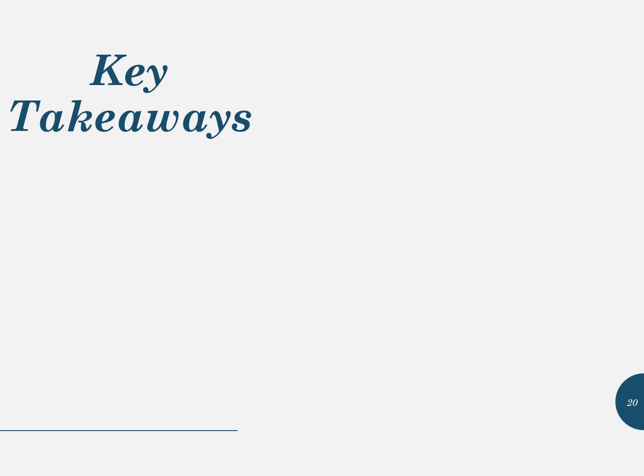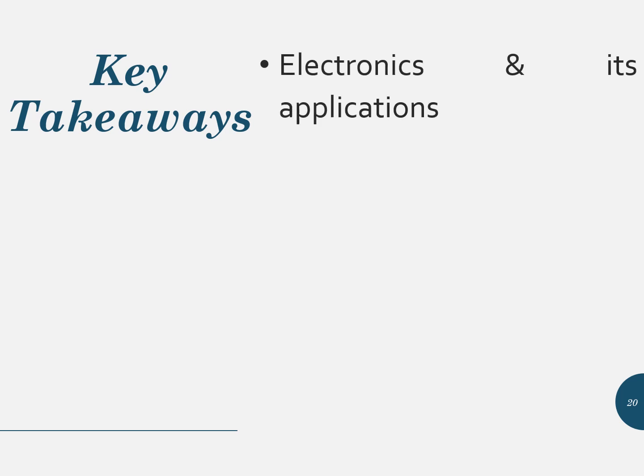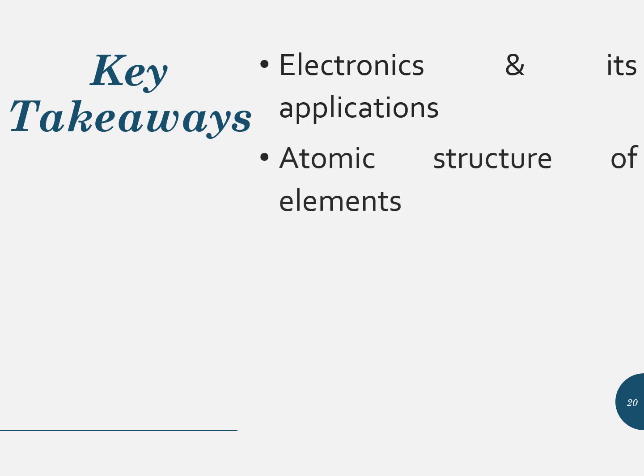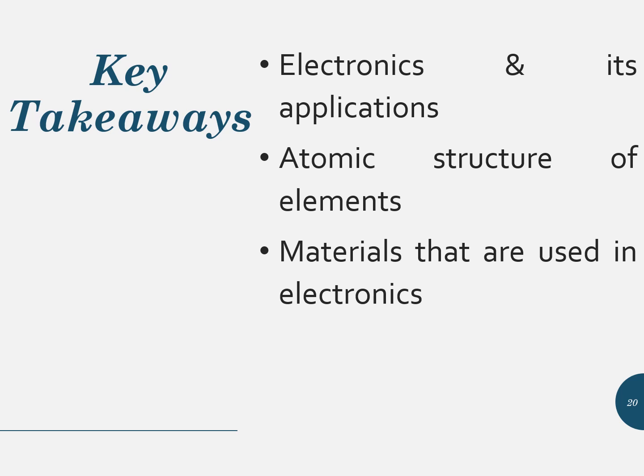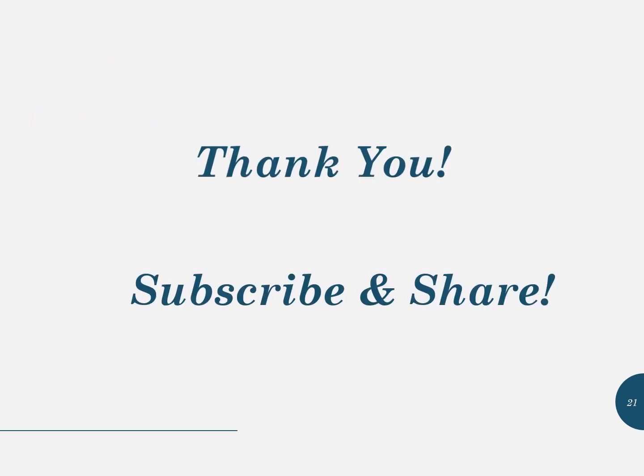What are the key takeaways of this lecture? You understood what electronics is and what its applications are. You also understood the atomic structure of elements. You studied the materials used in electronics, classified into three groups: conductors, semiconductors, and insulators. You also studied the band model of insulators, conductors, and semiconductors. Thank you for watching. If you have any questions, write them in the comment section. Don't forget to subscribe to our channel and share it with your friends and family.